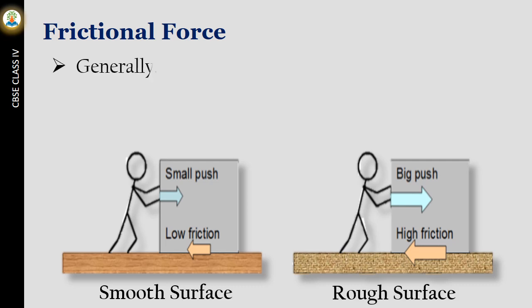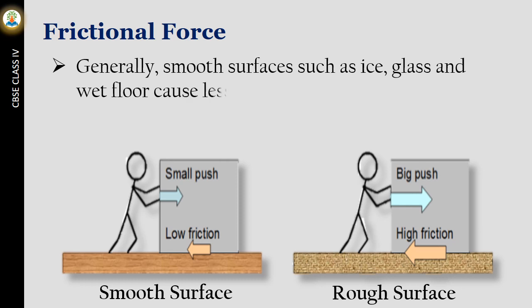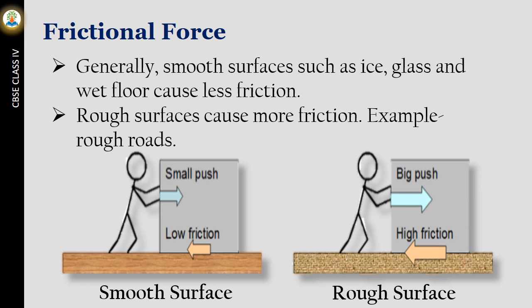Generally, smooth surfaces such as ice, glass and wet floor cause less friction. Rough surfaces cause more friction. Example: rough roads.